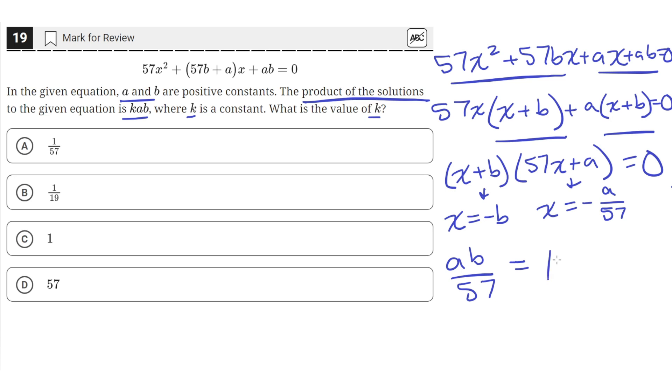And this is given as kab. Since a and b are positive constants, we can divide them from both sides of the equation. When we divide a and b from both sides, we're left with 1/57 = k. So that means k = 1/57, which is answer choice a.